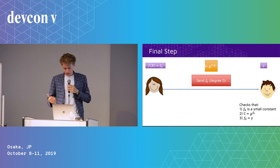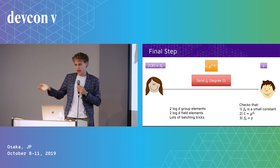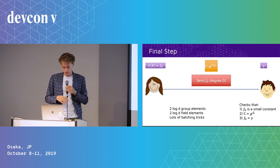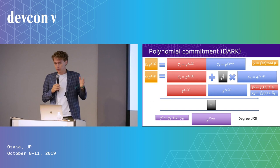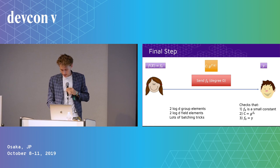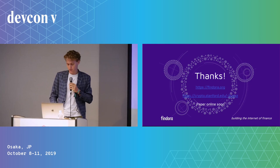This gives us a polynomial commitment with 2 log d group elements per round and 2 log d field elements, and we can use lots of batching tricks to make this really efficient. There are some more tricks needed to make the verifier efficient — for example using recent work in the space of VDFs to make the checks efficient. I'm done with the main part of the talk. There are some optimizations I could discuss, but I'll take questions now. Thank you.